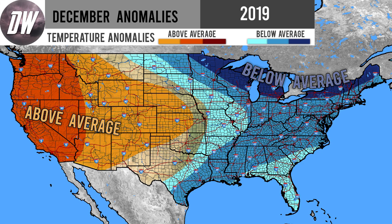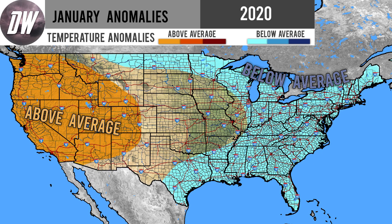Moving on to January, this looks to be the most averaged-out month — just the first shade of orange and the first shade of blue. This is one of the colder months for the West and the warmer months for the East. We don't even get into that second shade on either side. The warm has moved a little further west — Kansas and Nebraska are now at average temperatures, as well as the northern Rockies and some of the four-corner states. Montana, North Dakota, Minnesota eastward are below average, as is Texas, Louisiana, and Arkansas eastward — slightly below average.